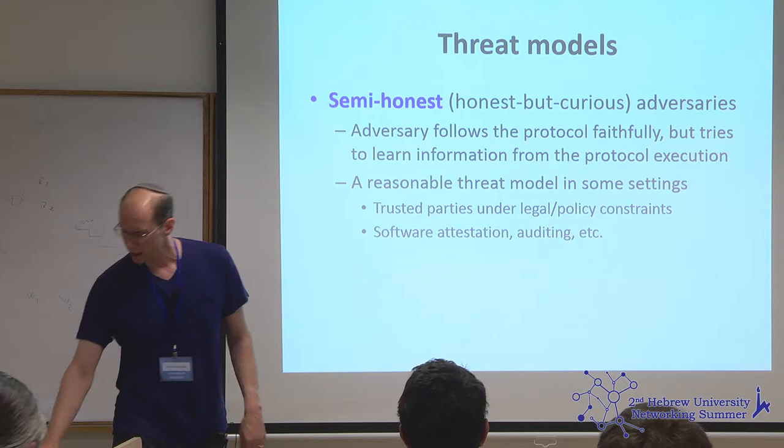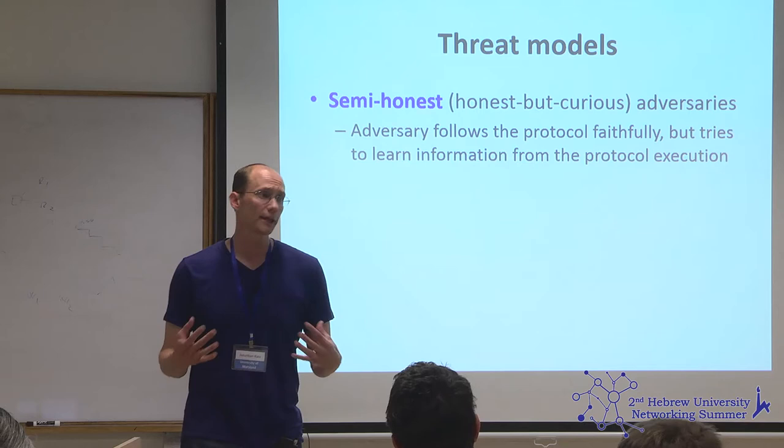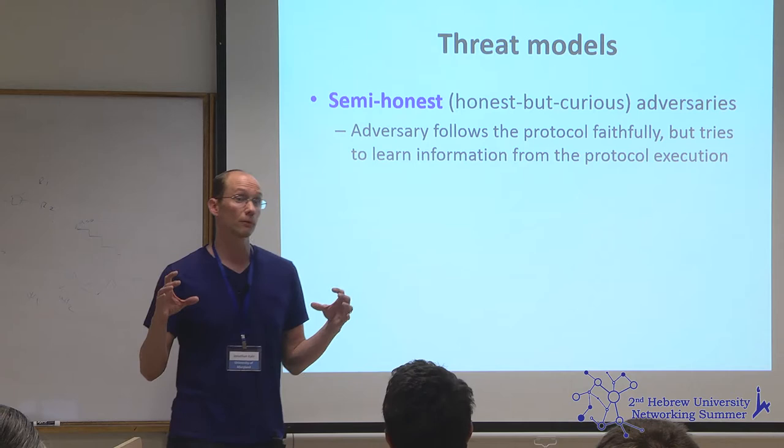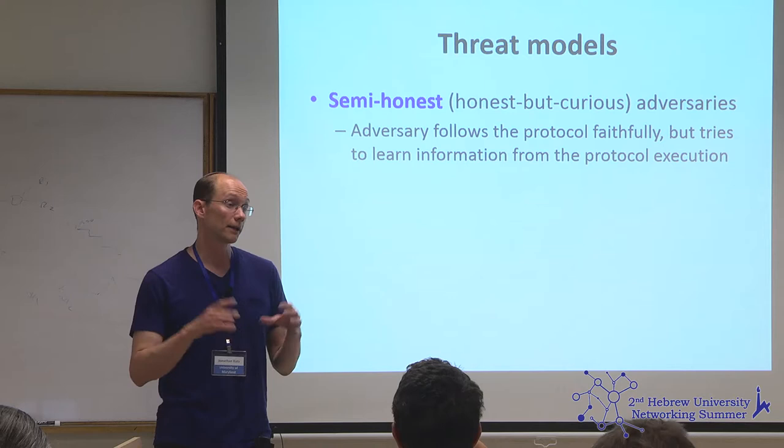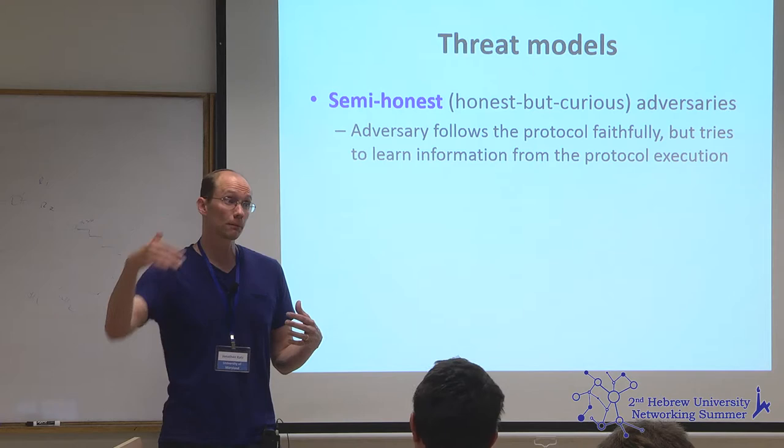There are two main threat models in secure computation. The first is the semi-honest model, also called honest-but-curious: the attacker can corrupt some number of parties running the protocol, but they all follow the protocol faithfully — they're not modifying the software on their machines. What they're doing is looking at their view of the protocol execution, and if multiple parties are corrupted they can combine their views to try to learn what they can.